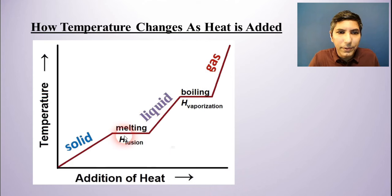Now notice that the heat associated with melting is called the heat of fusion. That means how much heat, how much thermal energy it requires to melt one gram of a substance. Heat of vaporization is how much heat it requires to boil one gram of that liquid.